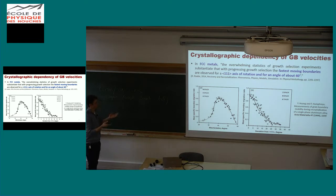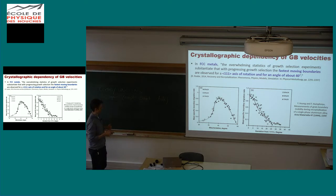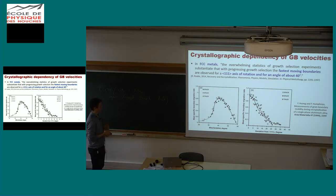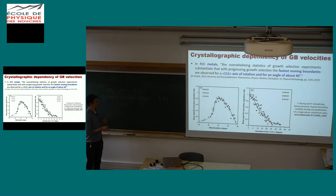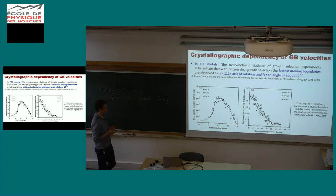Here there is an experimental paper — there are numerous, I'll just pick one — where you have the mean boundary migration rate with respect to the misorientation degree, and you have a peak, a rather broad peak, around 40 degrees, and here we have the deviation from the 111 axis.